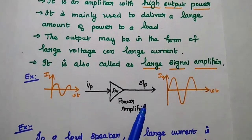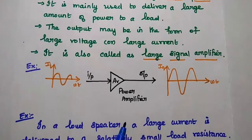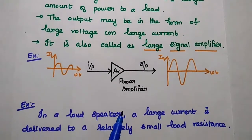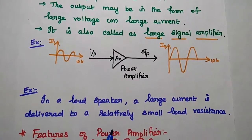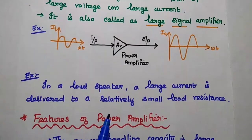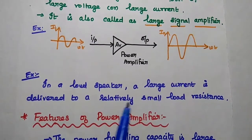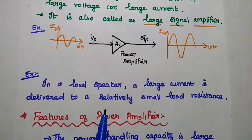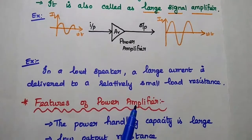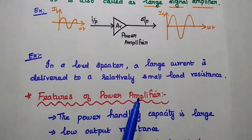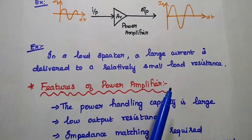This is the simple diagrammatic representation of power amplifier. Here we can consider the example of a loudspeaker application. In this loudspeaker, a large amount of current is delivered to a small load resistance. So here we can use the power amplifier in a loudspeaker application.